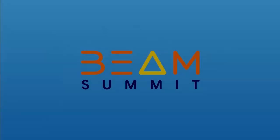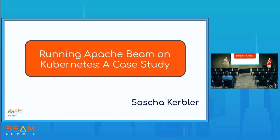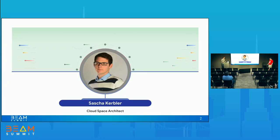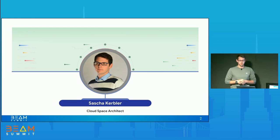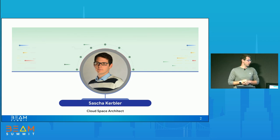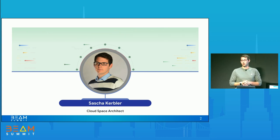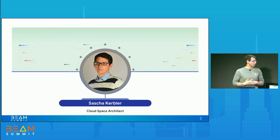This is Sascha Kerbler, and he'll be talking about running Apache Beam and Kubernetes. My name is Sascha. I'm currently a Cloud Space architect. I joined Google in 2019 as a customer engineer in Austria, Vienna, and just recently moved to Munich, joined the Cloud Space team there as an architect, where we work with our customers on designing and implementing solutions based on GCP products.